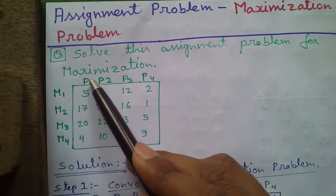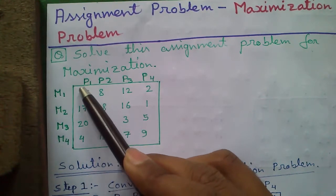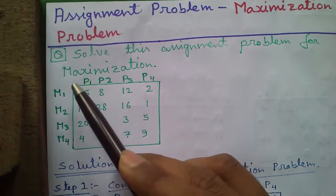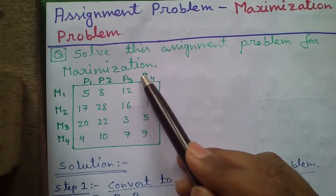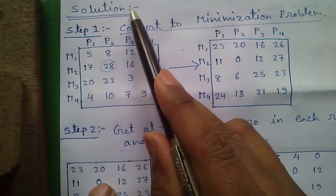For example, if we assign machine 1 to person P1 our cost of allocation will be 5 units, that may be 5 rupees or 5 dollars. But if we assign machine 1 to person P4 our cost of allocation reduces to 2. So let's proceed to our solution.